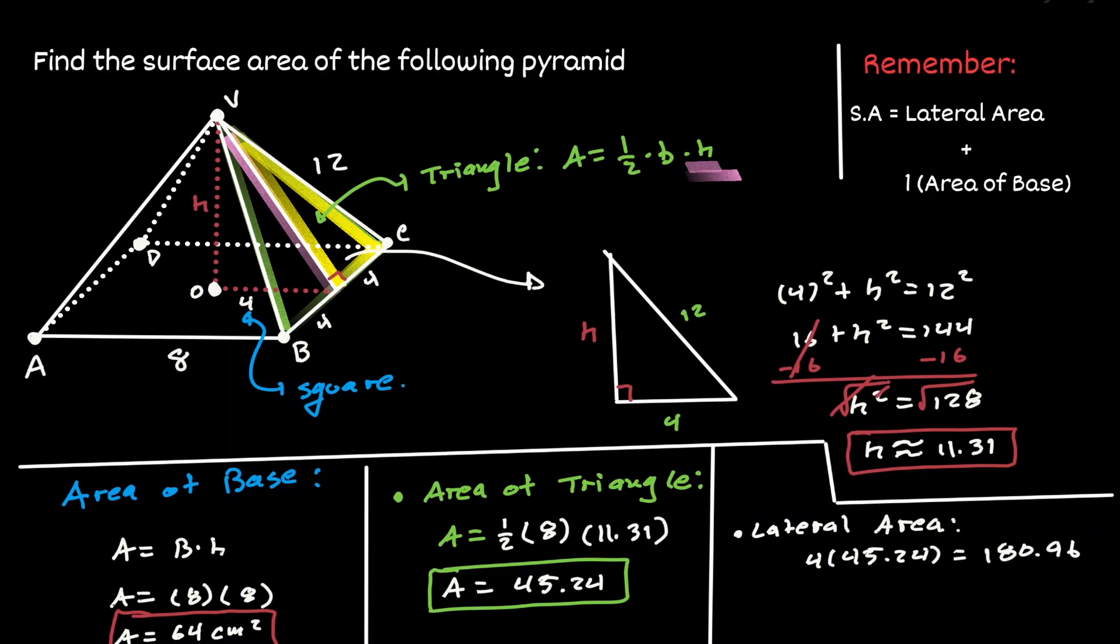So now we have all the information that is needed to find the surface area. Because it will be the lateral area, which is 180.96, plus the area of the base,